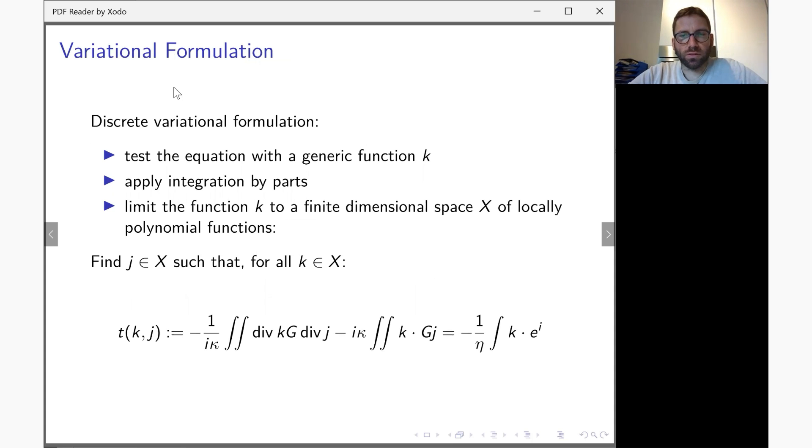To solve the system we apply in essence the same technique as we do in the finite element method. That is, we move to a variational formulation. This is done by testing the equation with a generic function k. This is pretty generic apart from some smoothness conditions, and testing means that we multiply and then integrate.